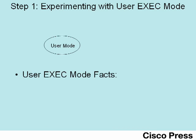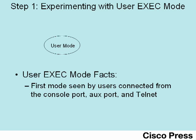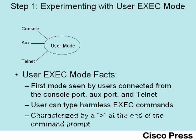So let's go ahead and begin step one. To reach user mode in a router, the user must either connect to the router through the console, or through an auxiliary port, or by telnetting into the router. Any of these three methods let the user reach user mode, so it's the first mode that a user sees on the command line interface on a router. From user mode, the user can type any harmless exec commands — they're harmless because you can't hurt the router, and they're called exec commands because the router takes the command, executes it, and spits back some command output to you. You know you're in user mode when you look at the command prompt and see a greater than sign.